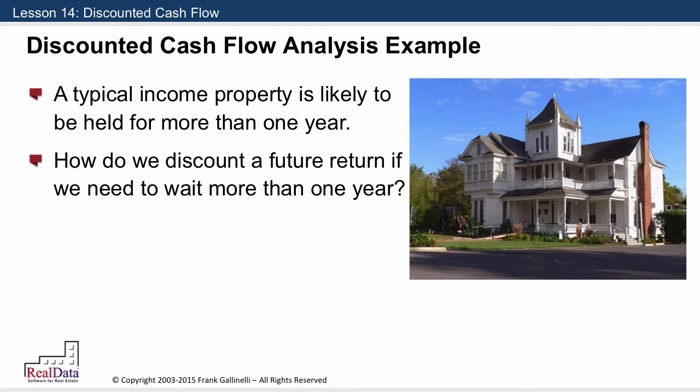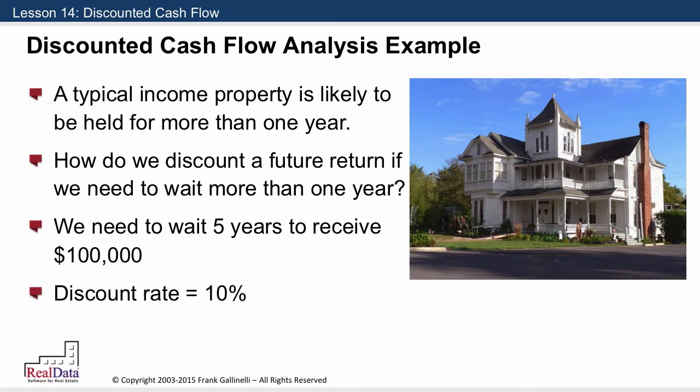Well, let's take a look at this example. Let's say that we're going to have to wait five years to receive $100,000. Let's also say that we feel we need to discount that future cash flow by 10%, because we feel that 10% is the kind of return that we could have earned with that money if we had it in our hand today.